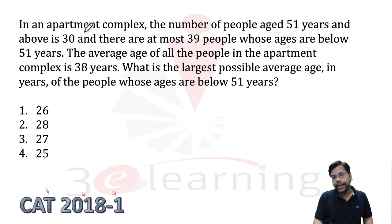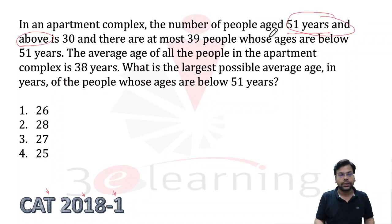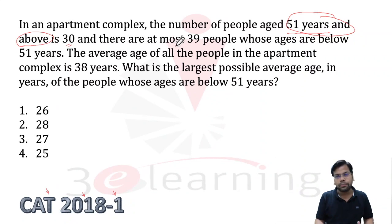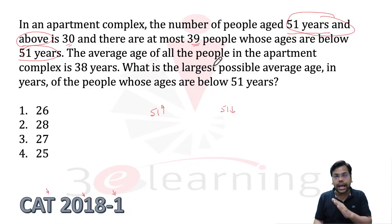In an apartment complex, the number of people aged 51 and above is 30. There are at most 39 people whose ages are below 51. So we have two categories of people: 51 or above, and below 51. And we have the average of the entire complex.